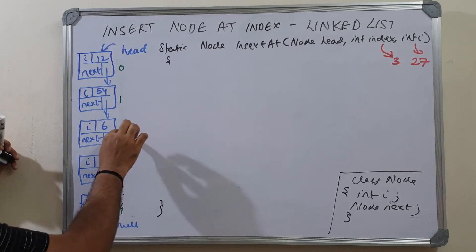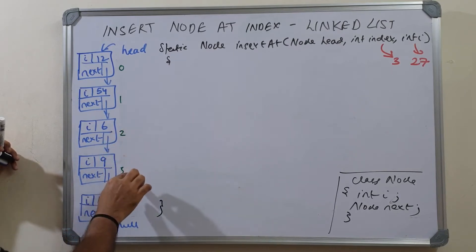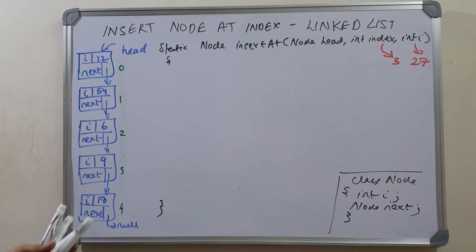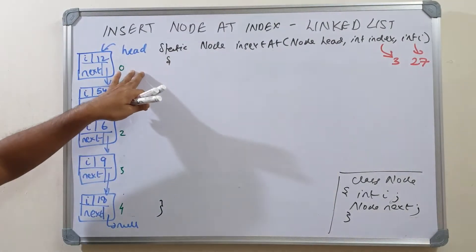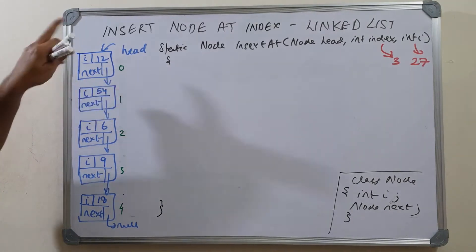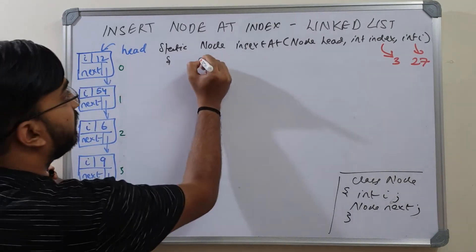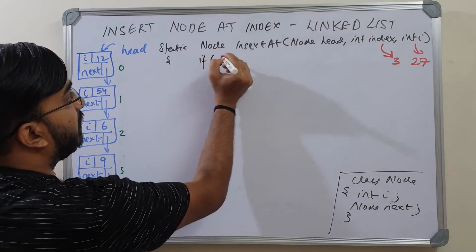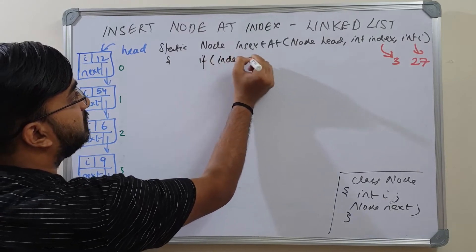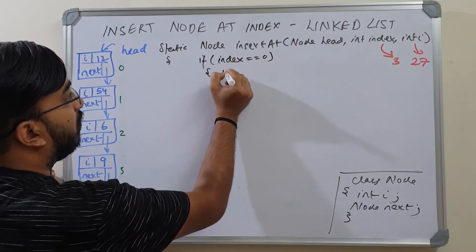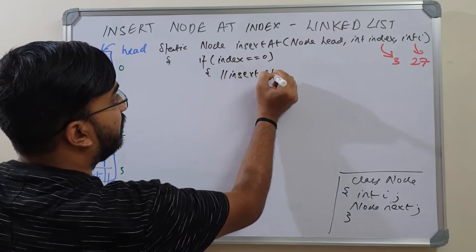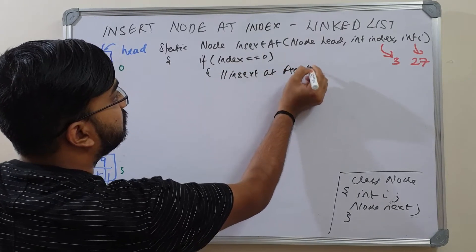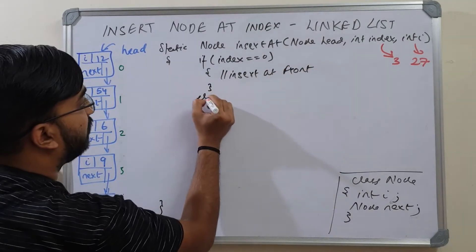The new node has to be between indices 2 and 3. If you observe, when your value of index is 0, it means you have to insert at the front of the linked list. So you can handle that case separately — if index is equal to 0, you can call the method to insert at front, which we have already discussed, and then we come in the else part.